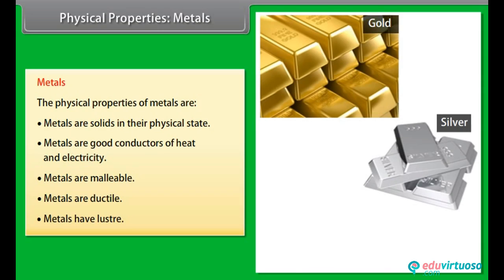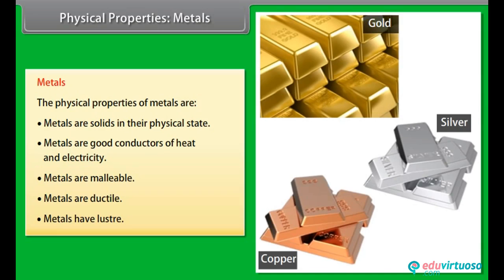Luster. Metals reflect light from their shiny surface. They can also be polished. For example, gold, silver and copper are metals with a shiny surface and can be polished.